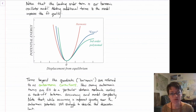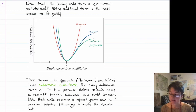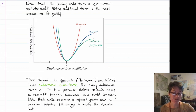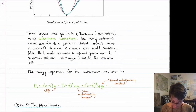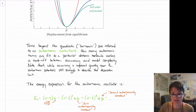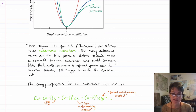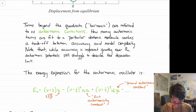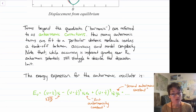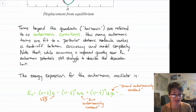Taylor expansions aren't guaranteed to be accurate far from the parametrization point, so even with anharmonic corrections we can't study dissociation well. Since we're just including polynomials, the potential will go to positive or negative infinity at large distances - not the constant dissociation energy we expect. Our energy expression for the anharmonic oscillator looks similar to the harmonic oscillator with a few additional terms to describe anharmonicity, requiring a few more fit parameters.